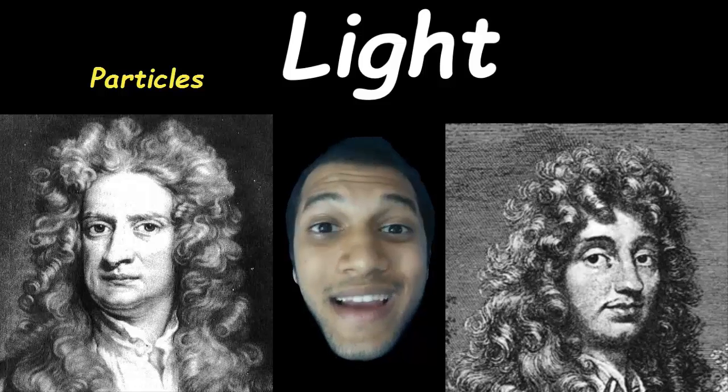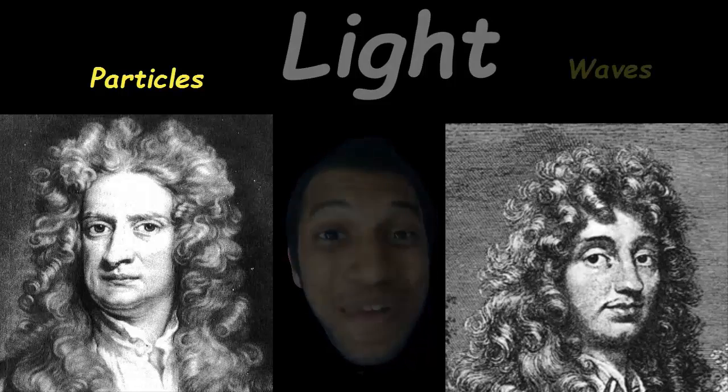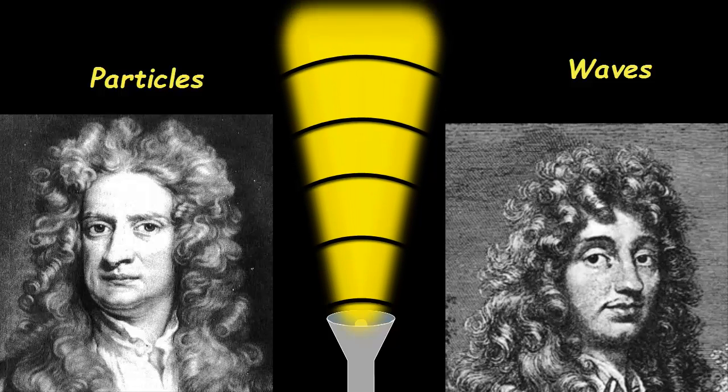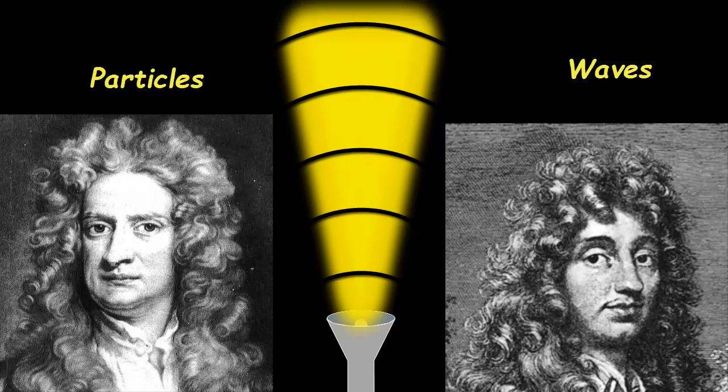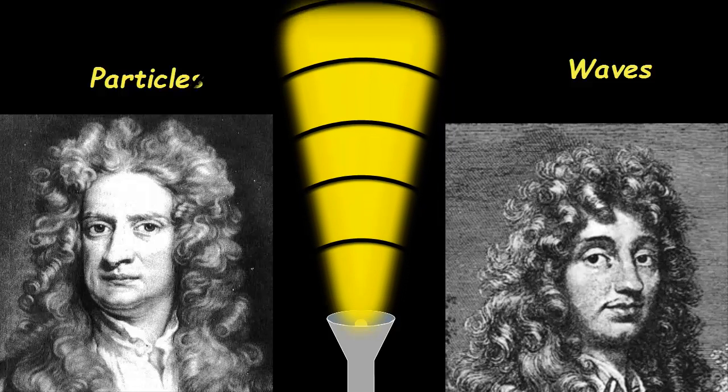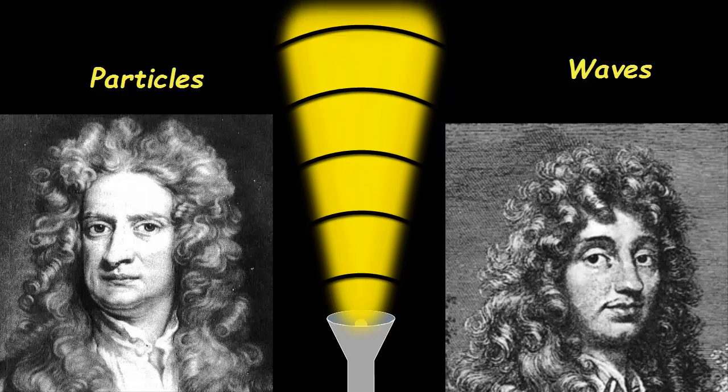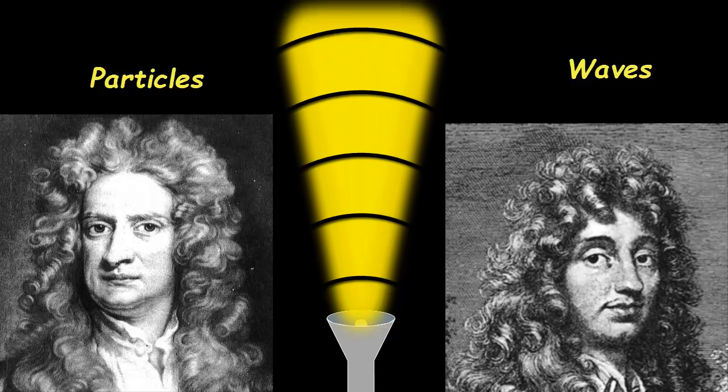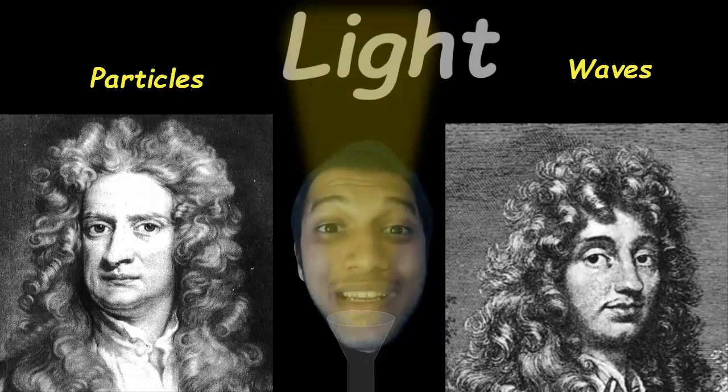So Huygens said, light is not particles, but light is waves. It's very difficult to think about that. He basically says, think about what happens if you take a stone and you drop it in a pond. Circular ripples go out, right? These are waves. He says light is just like that. They are waves.